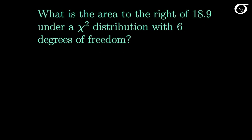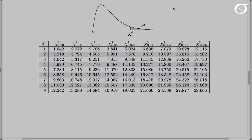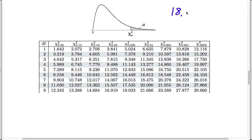Let's look at a different type of problem. What is the area to the right of 18.9 under a chi-square distribution with 6 degrees of freedom? Our chi-square distribution with 6 degrees of freedom looks something like this, and a value of 18.9 is going to be out in the right tail. So let's find the area to the right of 18.9 under that distribution.